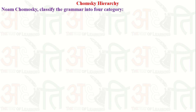Chomsky Hierarchy is a classification by Noam Chomsky that divides grammar into four categories. According to this, for a specific grammar there is a specific language generated by that grammar, and there is a specific machine which can accept or reject a given string — determining whether it belongs to that particular language or not. This machine is known as an automata.